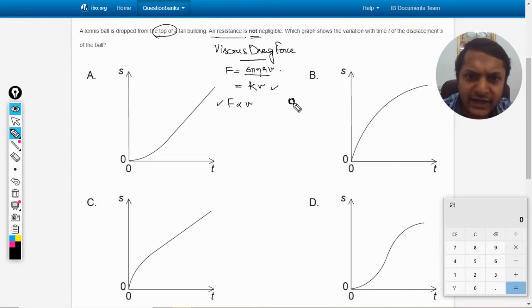So when the ball has started falling, it would be falling. The velocity will increase first of all. It will be acted upon by the weight and acceleration due to gravity will act on it because the velocity is zero, there is no drag force.